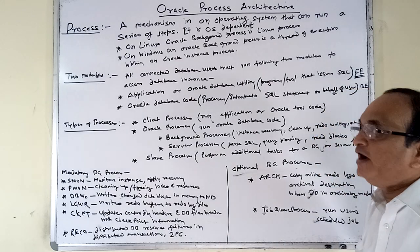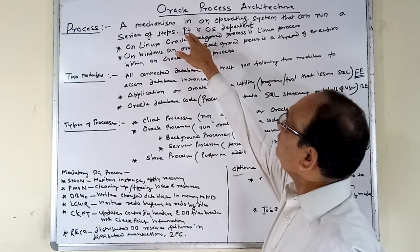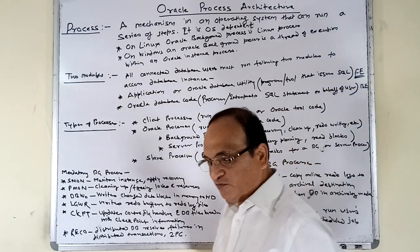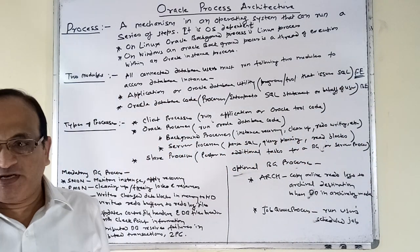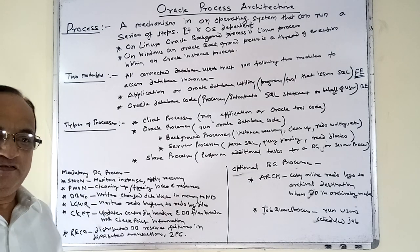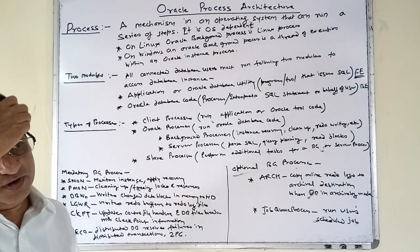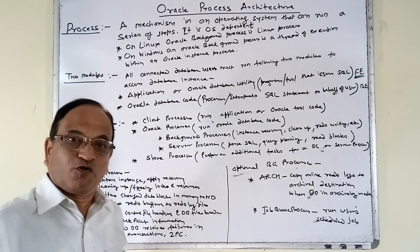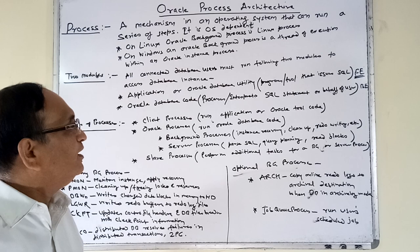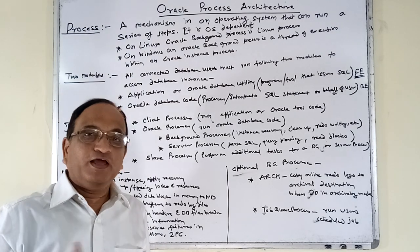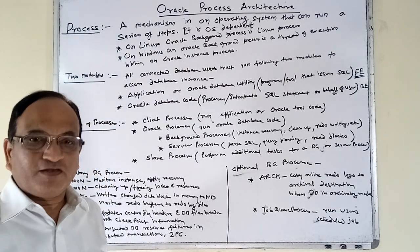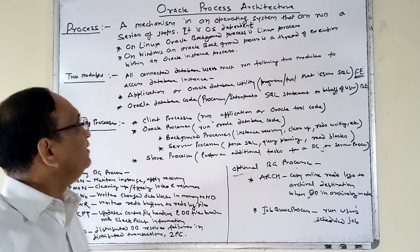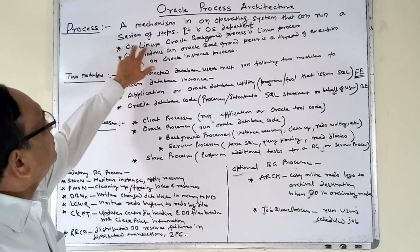The operating system has influence over the process, so the process is operating system dependent. There are various types of operating systems like primitive multitasking systems or cooperative multitasking systems, and depending upon that, Oracle processes are also configured accordingly.